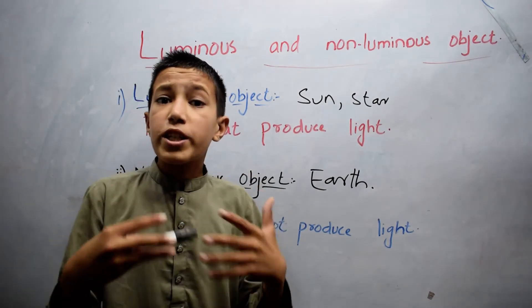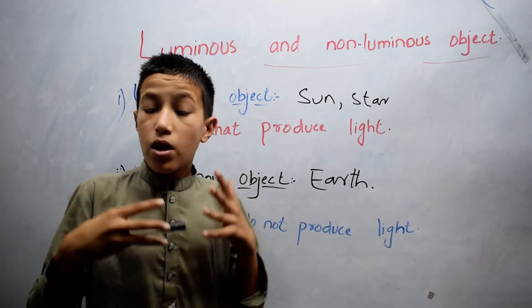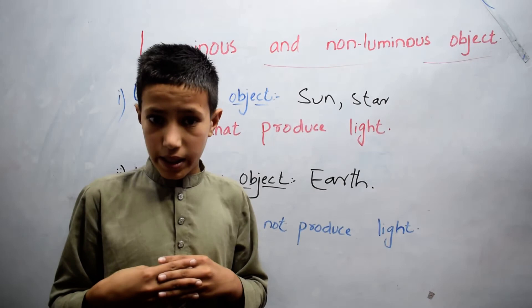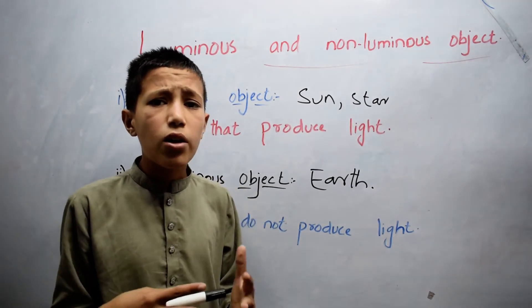We see non-luminous objects because light is reflected from them into our eyes. Tree is an example of a non-luminous object.